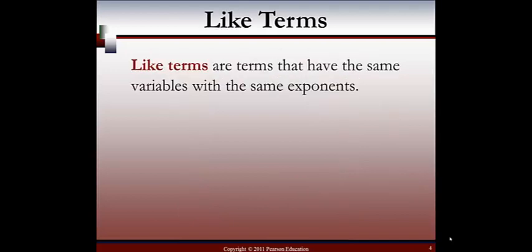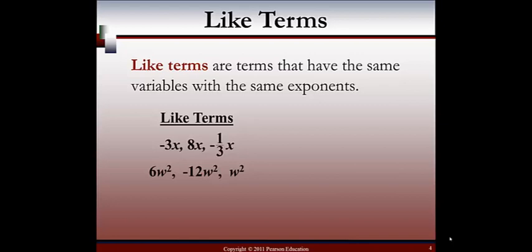Like terms are terms that have the same variables with the same exponents. Here are a couple examples of like terms. On the first row, we have negative 3x, 8x, and negative 1 third x. Notice that they all have x, and the x only has a power of 1. In our second example, we have 6w squared, negative 12w squared, and w squared. These are all like terms — they all have the same variable w with the same exponent, each raised to the second power.